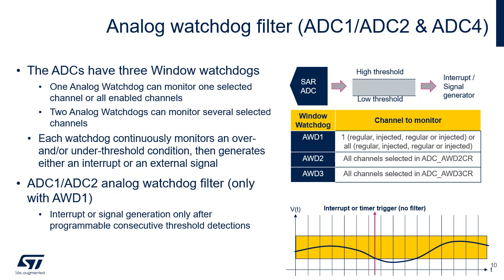Each ADC has three integrated analog watchdogs with high and low threshold settings. The ADC conversion value is compared to this window threshold. If the result exceeds the threshold, an interrupt or timer trigger signal can be asserted without CPU intervention. For ADC1-ADC2, analog watchdog 1 also has filtering capability: if data is out of range for more times than specified in AWD-FILT in the ADC-X-HTR1 register, the AWD-X flag is set and the corresponding interrupt is issued.